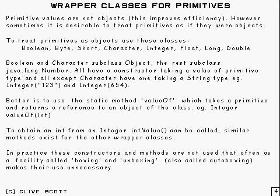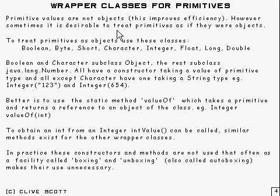As I've shown, primitive values don't get treated the same way as objects. The reason for this, of course, is it improves efficiency. It's one of the trade-offs that have to be made in Java, whether to have everything as objects or not. Some languages, like Smalltalk, have everything as an object, but not in Java.